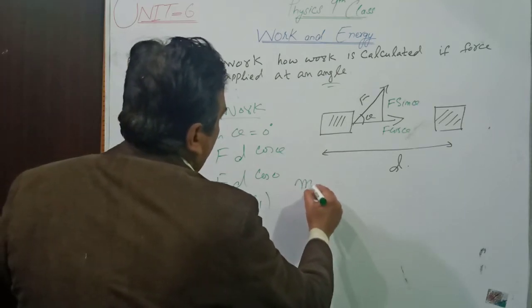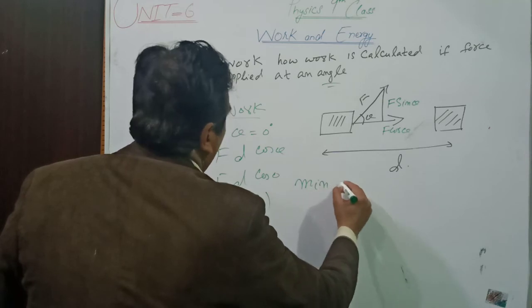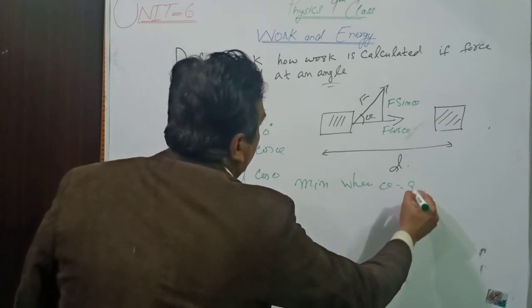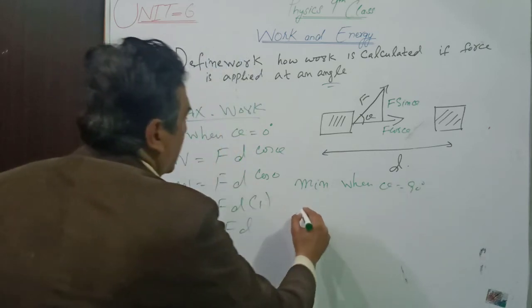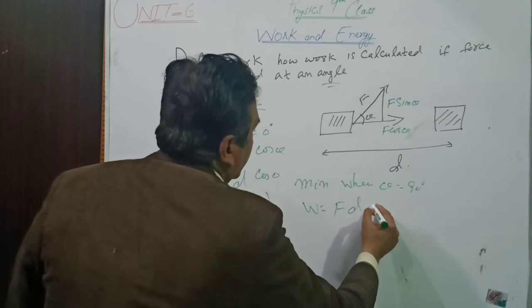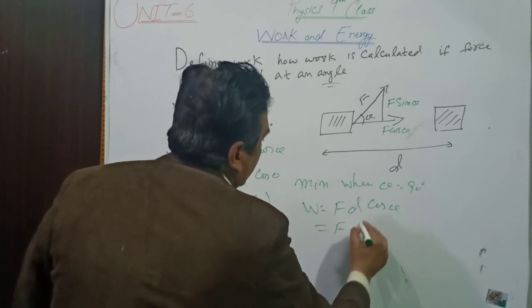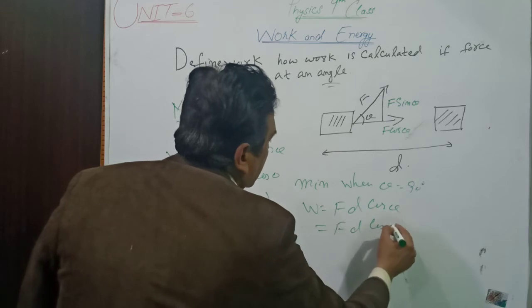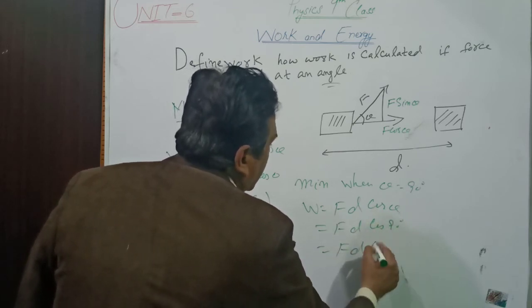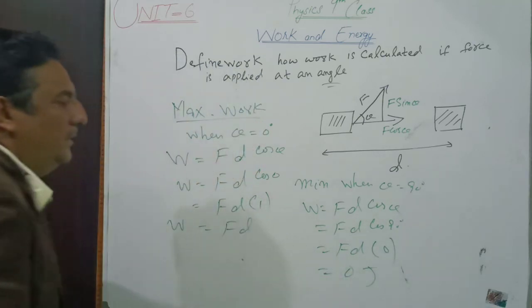Minimum work: when theta is equal to 90 degrees. Again write this formula W equals F d cos theta. F d cos 90 degrees. F d cos 90 is 0, so 0 Joules of work is done.